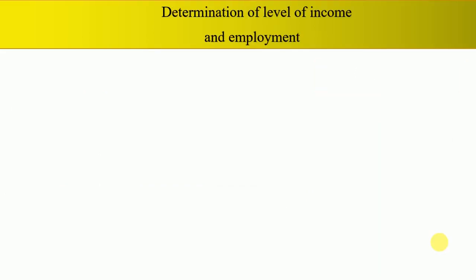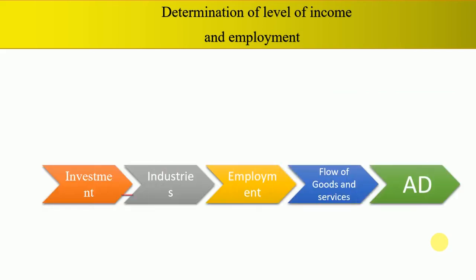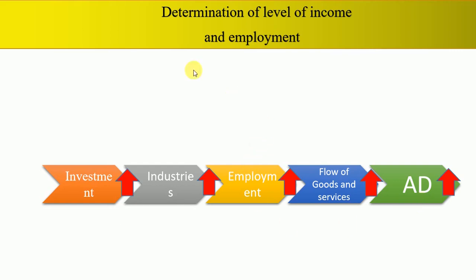On the other hand, macroeconomics helps in the determination of the level of income and employment. More investment in an economy will lead to the rise of more industries. More industries require more employment of labor, which implies more efficient production, better marketing of goods and services, and timely availability of goods and services to customers. This means the flow of goods and services will be easy and efficient, leading to higher aggregate satisfaction and hence higher aggregate demand. Thus macroeconomics studies the aggregates in an economy and helps us understand the determination of the level of income and employment.